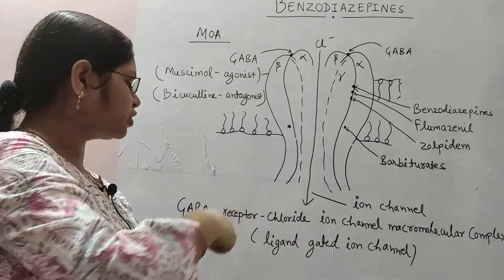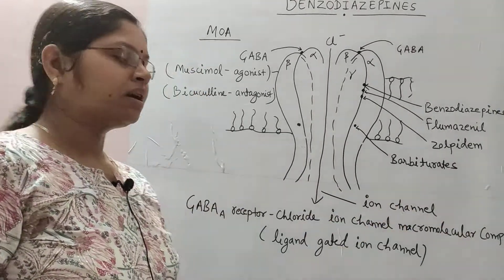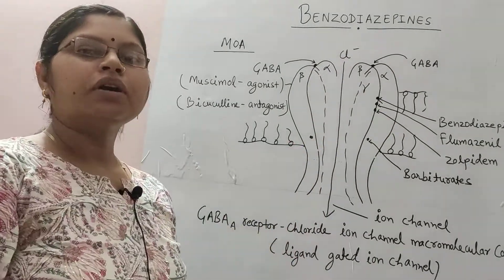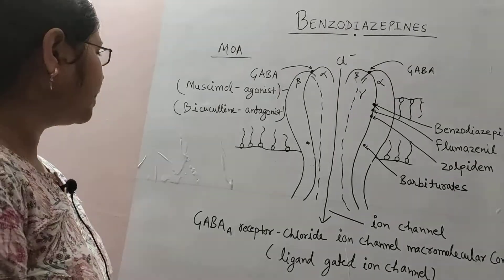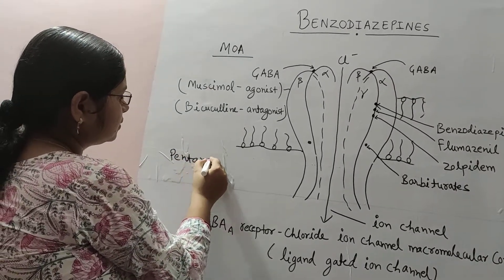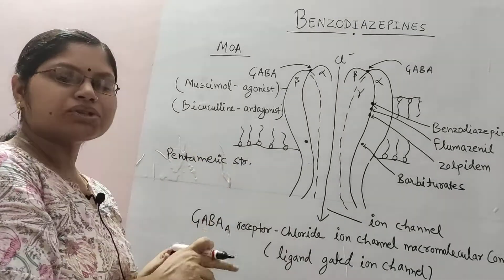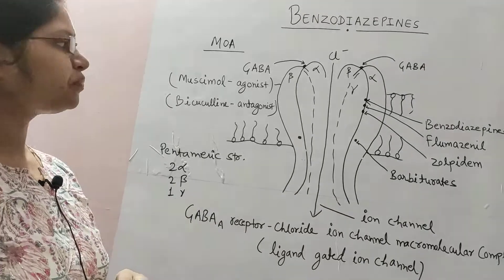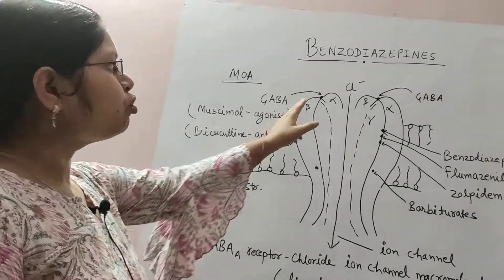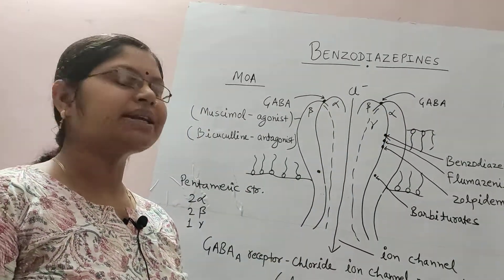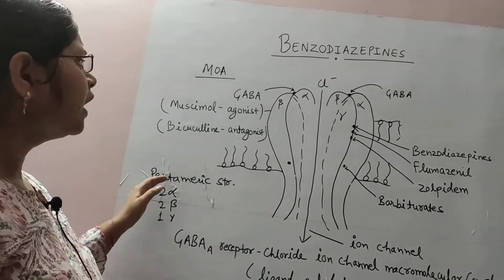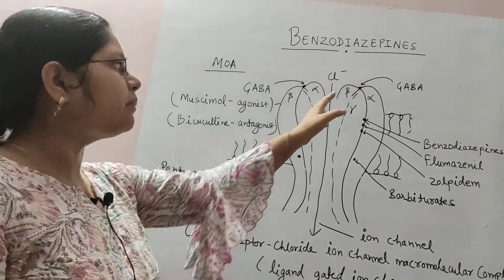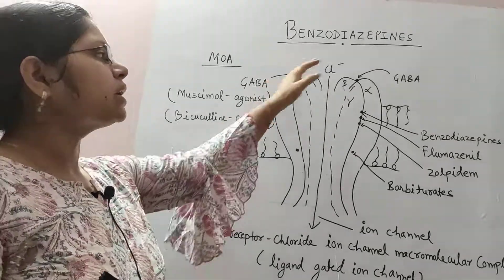This is the figure for the GABA-A receptor — the GABA-A receptor chloride ion channel macromolecular complex. It is a ligand-gated ion channel and is made up of 5 subunits, so it is also known as a pentameric structure. This pentameric structure is made up of 2 alpha subunits, 2 beta subunits, and 1 gamma subunit. There are 2 binding sites for GABA. GABA is gamma-aminobutyric acid, which is an inhibitory neurotransmitter. There are 2 binding sites for GABA because there are 2 alpha and 2 beta subunits, and the GABA binding site is present between the alpha and beta subunits.